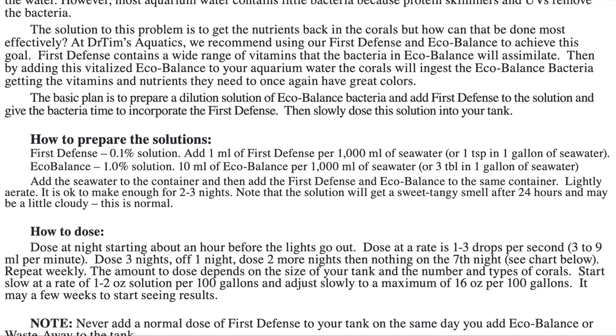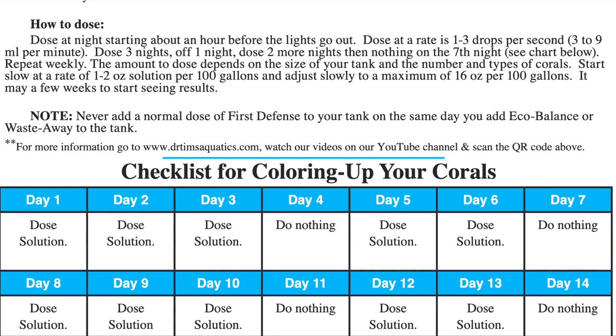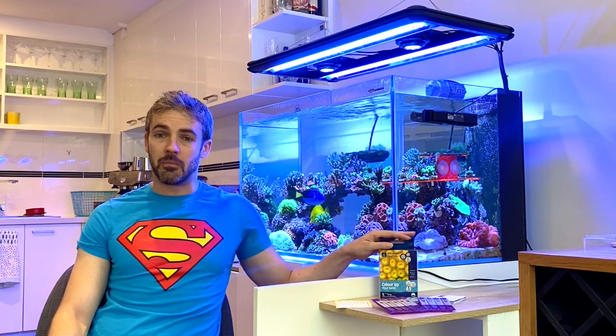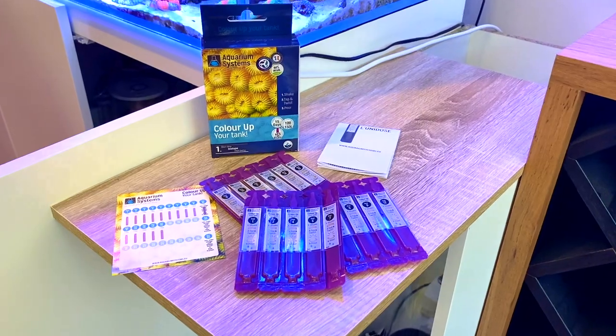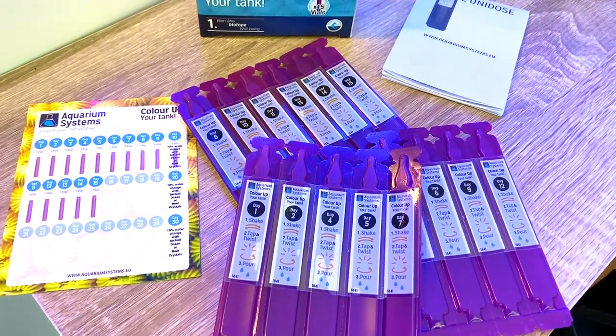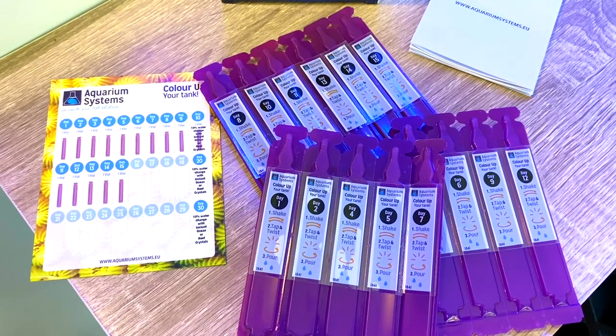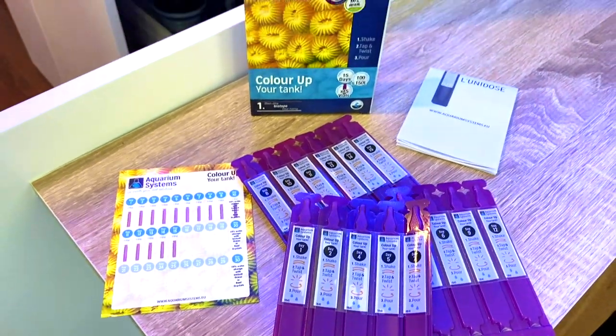It's a program that requires you to mix the products in a container of salt water with an air stone, then dose the mixture on specific days over a 14-day period. The advantage of this approach is that you're essentially breeding as much bacteria as you need for dosing to the size of your tank, so it's more efficient and economical for really large tanks. The second product, and the one that I'm going to be using, is the Aquarium Systems Coral Colour-Up program. This program is super easy and simple to follow — you buy a single kit that includes 15 vials of pre-prepared strains of various live bacteria. Each vial is labelled with a day on it, and you pour the appropriate vial into your tank each day. Think of it like an advent calendar for your reef tank.